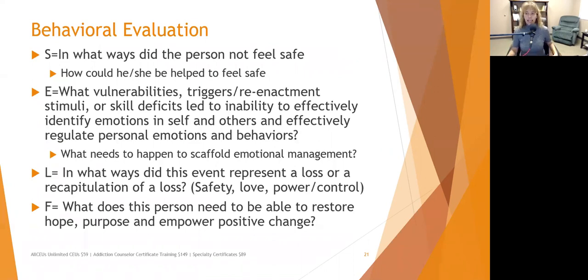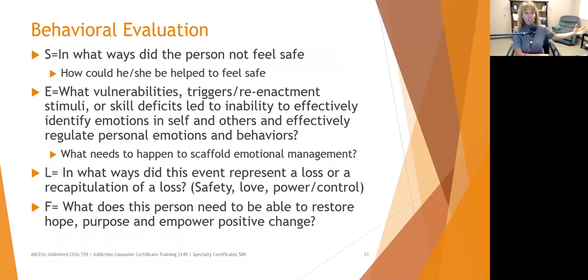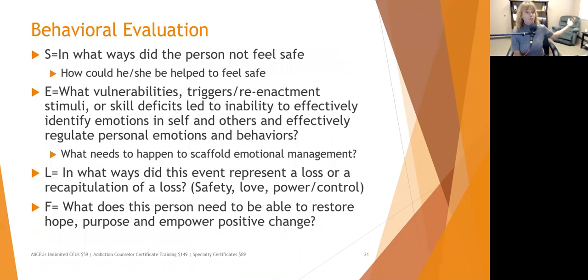L stands for Loss: in what ways did this event represent a loss or recapitulation of a loss? A lot of things happen that can remind us of the past — losing a sense of safety, for instance. In childhood, maybe a parent came home, slammed the door, and had a domestically violent interaction. That's traumatic. Fast-forward fifteen years: Jim Bob comes in and slams a door, and this may recapitulate that loss of safety. All of a sudden the person feels, oh crap, I'm not safe anymore.